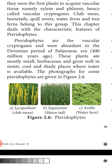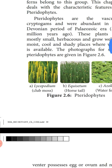Pteridophytes were abundant in the Devonian period of the Paleozoic era, about 400 million years ago. Now only a few species of pteridophytes can be found around us. These plants are mostly small, herbaceous, and grow well in moist, cool, and shady places where water is available.